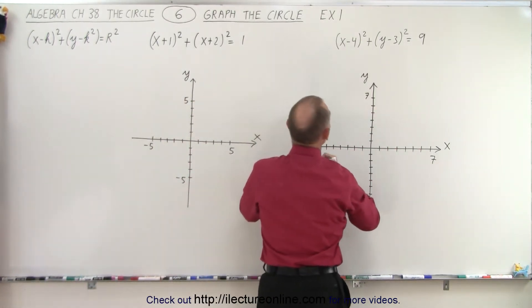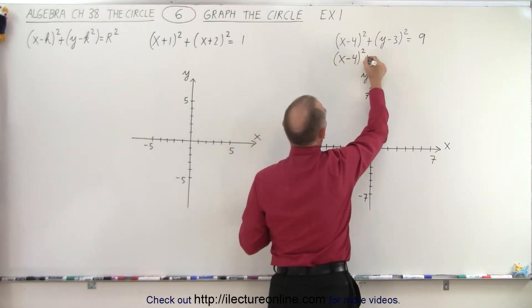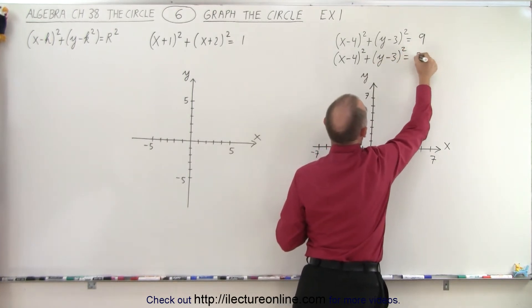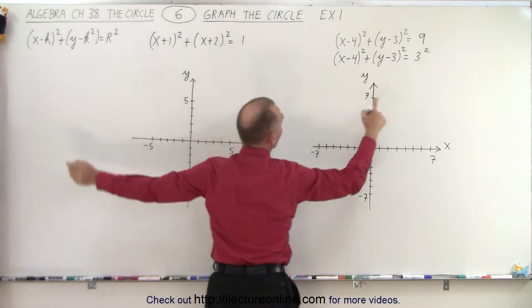So let's rewrite this. This can be written as (x-4)² + (y-3)² = 3² because now we can clearly see that the radius is equal to 3.